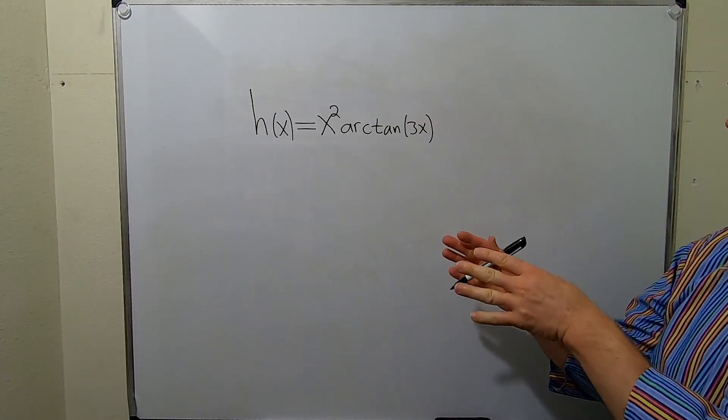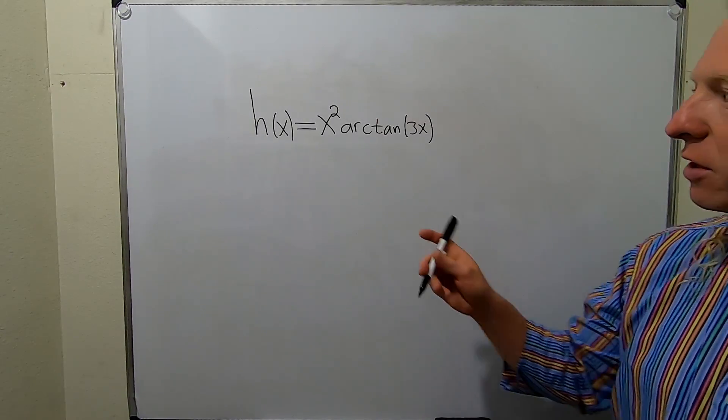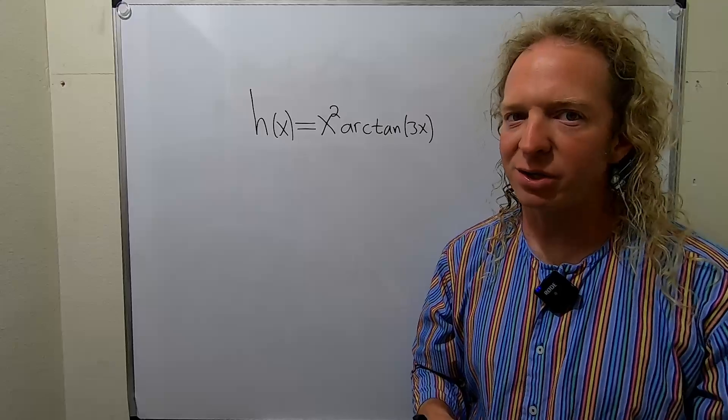In this problem, we're going to find the derivative of this function. The function is x squared times the arctangent of 3x.